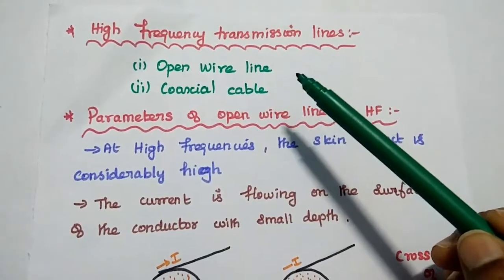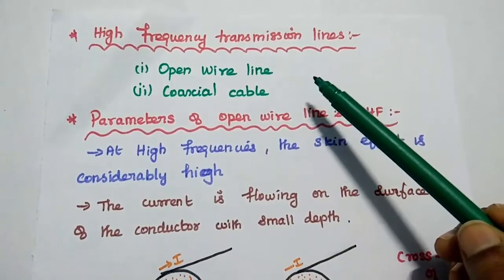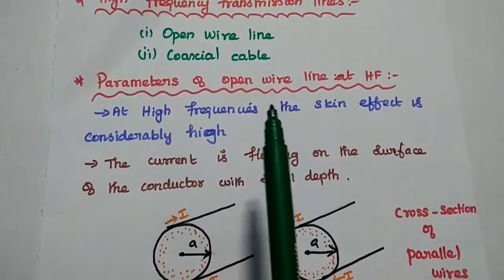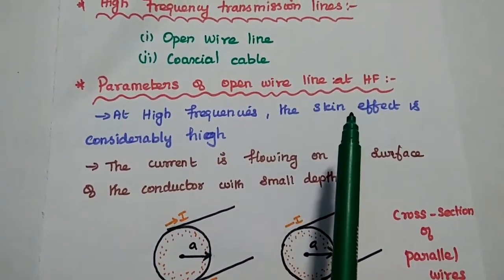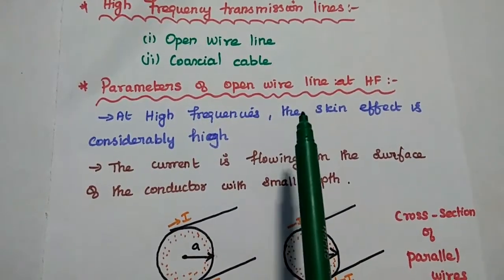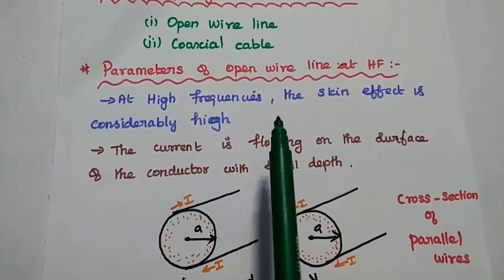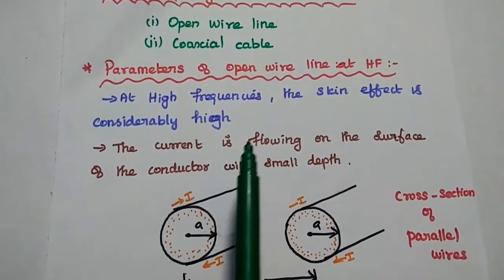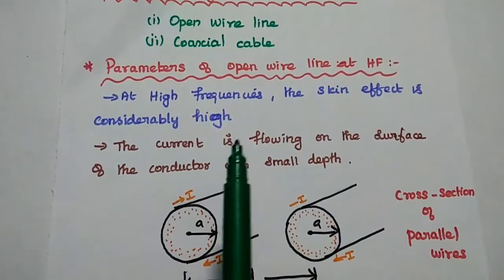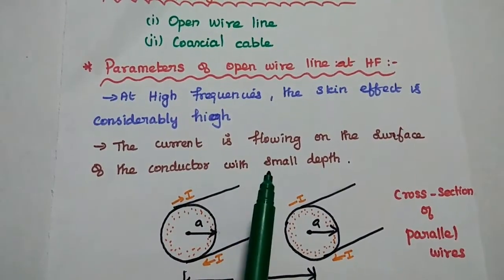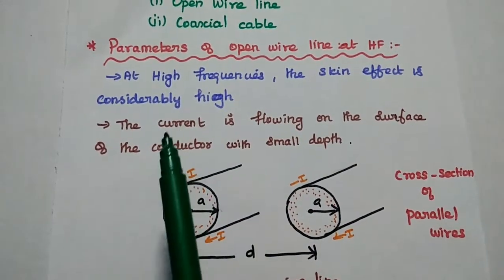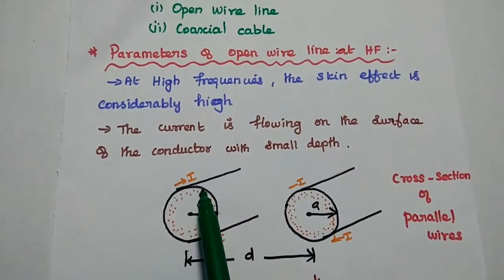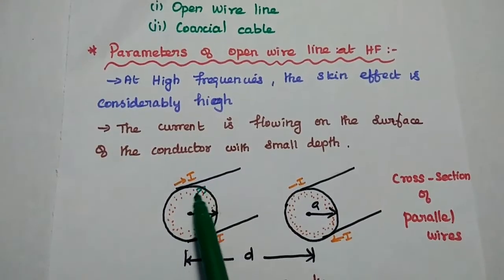There are two types of high frequency transmission lines available: open wire line and coaxial line. For the parameters of the open wire line at high frequency — since it is an open wire, the radiation is maximum. At high frequencies, the skin effect is considerably high for this open wire line, meaning the current is flowing on the surface of the conductor with small depth.